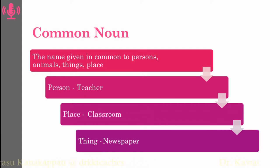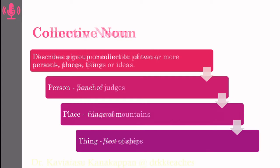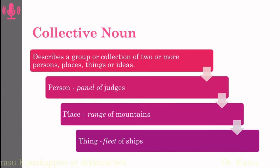As in, teacher is a person, classroom is a place, and newspaper is a thing. These are common names given to some person, place, or thing. The next one is collective noun. Collective noun describes a group or collection of two or more persons, places, or ideas.